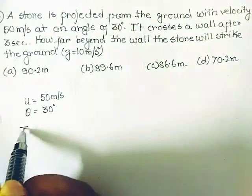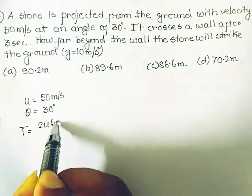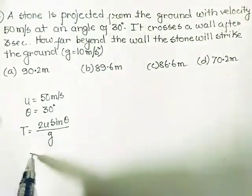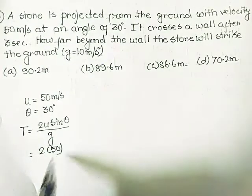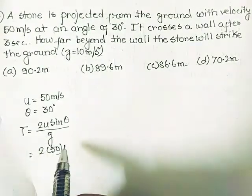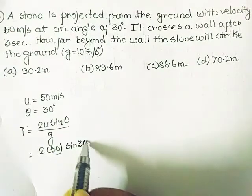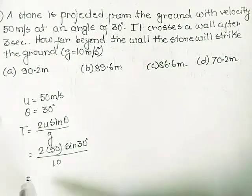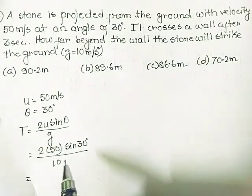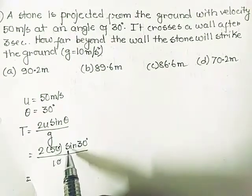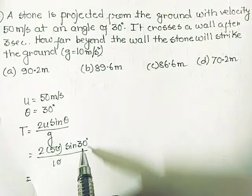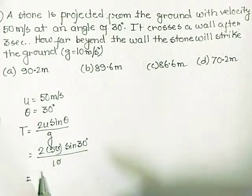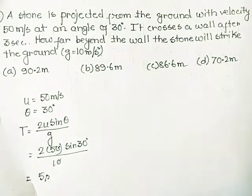So from here we can find out what is the total time of flight. T equals 2u sin θ divided by g. It is 2 times 50 sine 30 degrees divided by 10. Sine 30 degrees is 1/2, so 2 and 1/2 cancel out. So total time is 5 seconds.